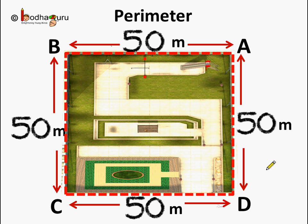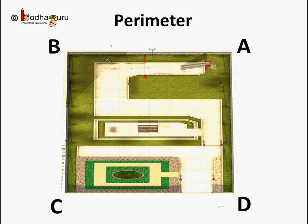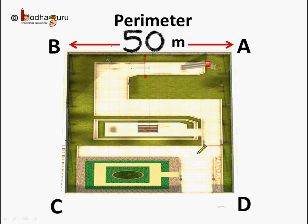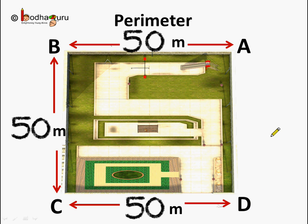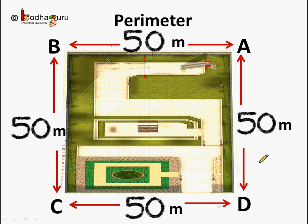And this was the boundary of this figure, or it was the total distance along the shape of the figure. Now you already know about line segments, so let's use the length of line segments to find the perimeter. It would be the length of line segment AB which is 50 meters, then line segment BC which is 50 meters, next line segment CD which is 50 meters, and lastly line segment AD which is 50 meters. So we can say the perimeter of a closed figure is the sum of the lengths of its line segments.